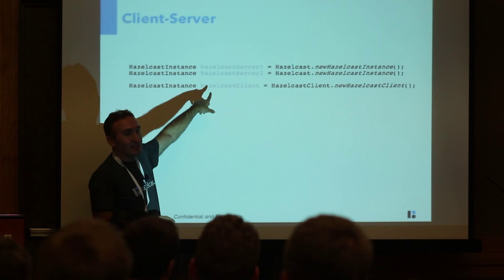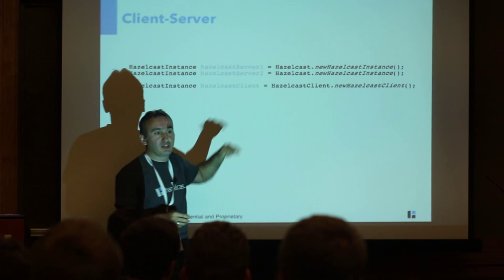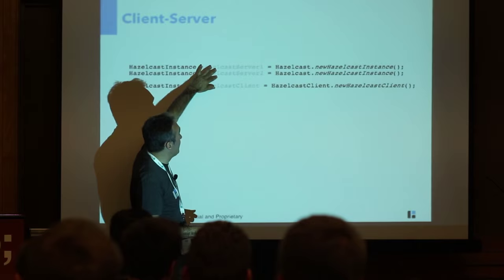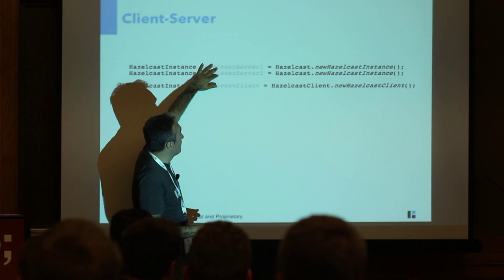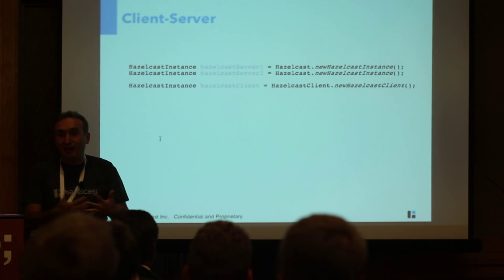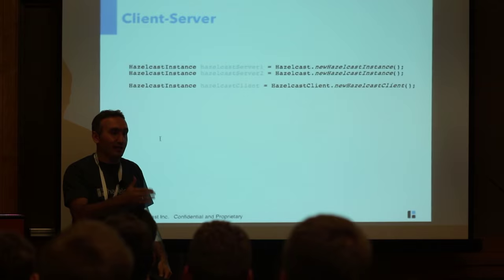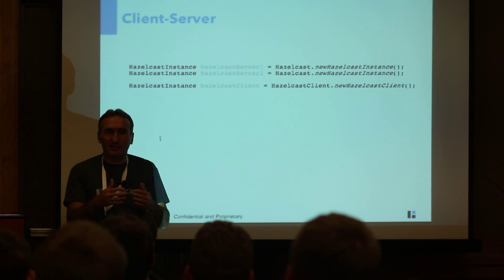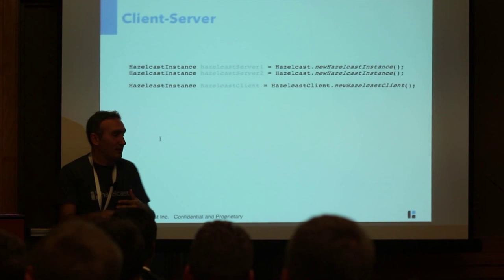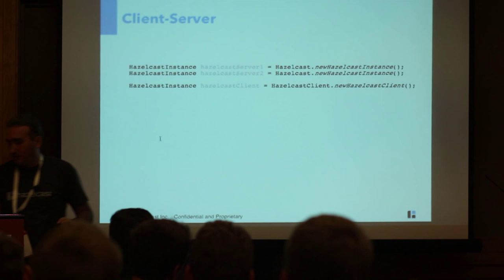The API is the same whether you run as server or client — only the way you obtain the instance differs. You can start two nodes in the same JVM; in our JUnit tests we start five nodes and run assertions. This is how you start a client. Eventually the interface is the same. If you want to switch from embedded to client-server topology, you change just one line to get the instance — the rest stays the same.